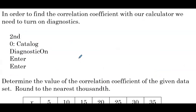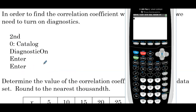How do we find the correlation coefficient when creating a line of best fit? We can do that with our calculator. In order to find the correlation coefficient, we need to turn on diagnostics. Once these are on, you shouldn't need to turn them on again unless your calculator resets. To turn them on: hit the second key at the top left, then hit zero which is catalog.